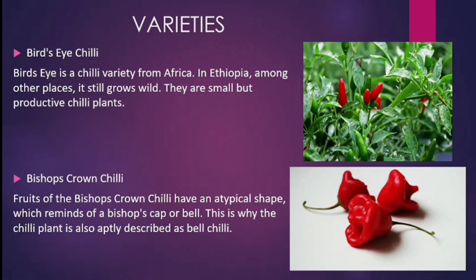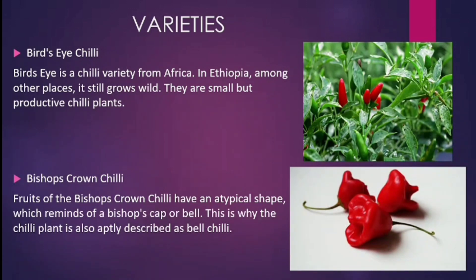Varieties. Bird's Eye Chilli — Bird's Eye is a Chilli variety from Africa. In Ethiopia, among other places, it still grows wild. They are small but productive Chilli plants. Bishop's Crown Chilli — fruits of the Bishop's Crown Chilli have an atypical shape which reminds of a Bishop's cap or bell. This is why the Chilli plant is also aptly described as bell Chilli.